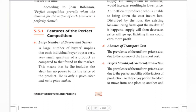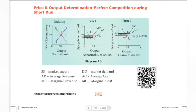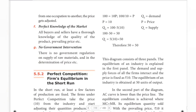Next, perfect mobility of factors of production. Factors of production — such as land and labor — can move freely. This is another important feature of perfect competition.